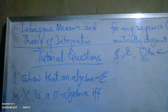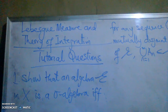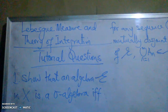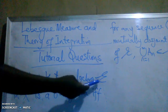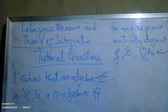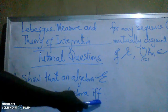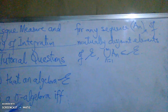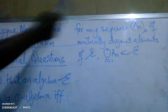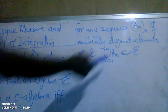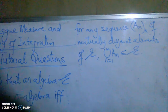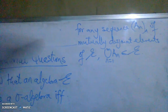Hello students, welcome to Mathematics with Dr. OJ. In this video we shall discuss some problems in Lebesgue measure and theory of integration, examining some tutorial questions. The first question: show that an algebra, epsilon in X, is a sigma-algebra if and only if for any sequence A_n of mutually disjoint elements of the algebra, the union of the sequence is in the algebra.